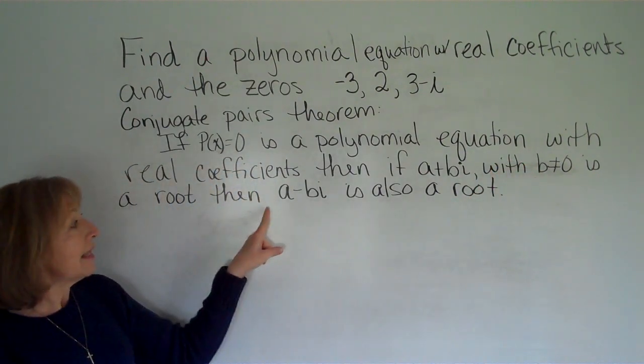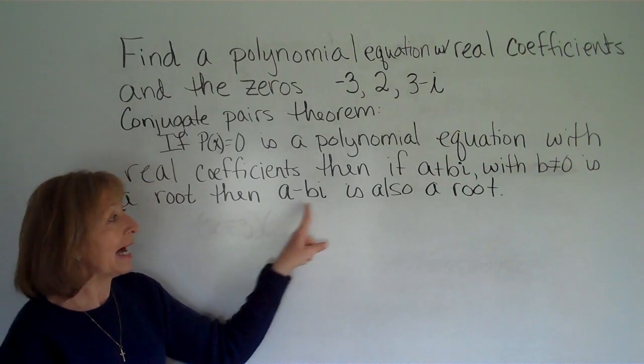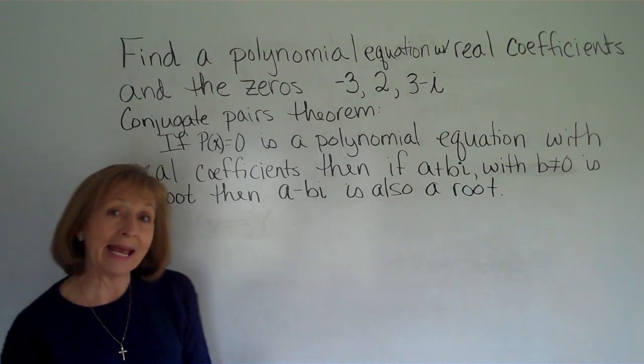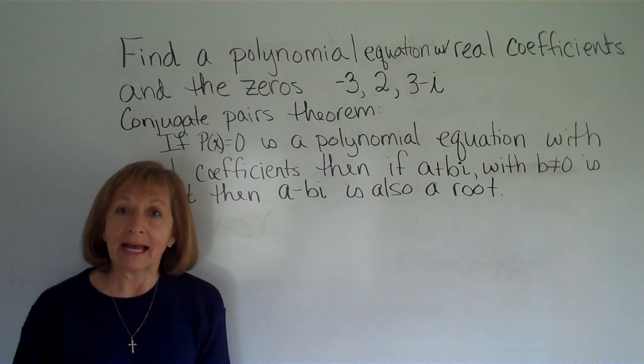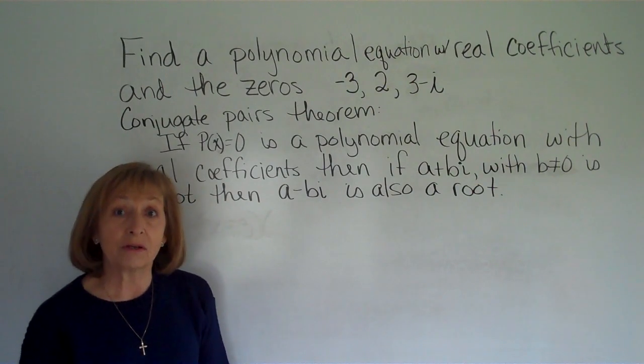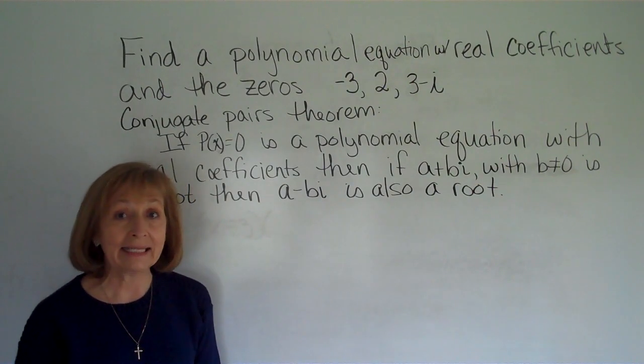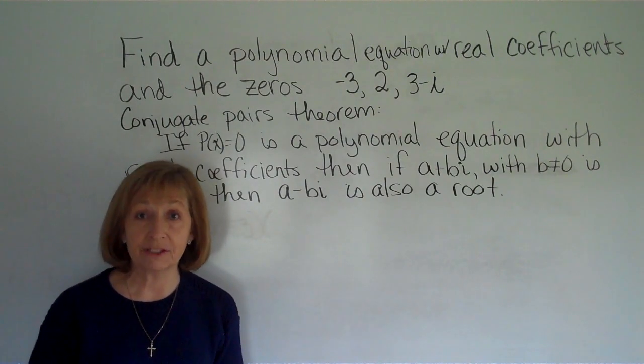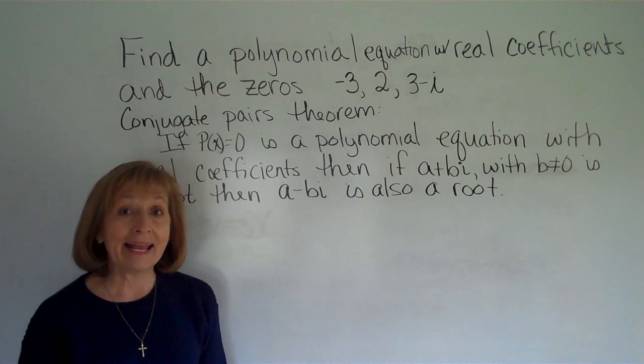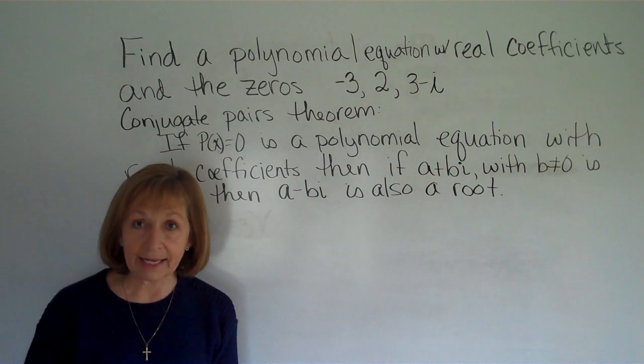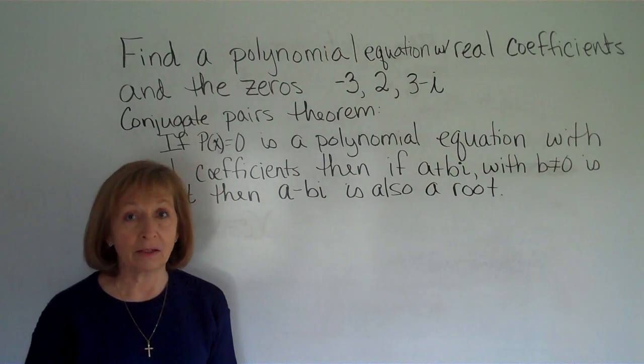then a minus bi is also a root. So if I have a root that has a non-zero imaginary part, so the number has a term with an i in it, and I want my polynomial equation to have real coefficients, then I have to make sure that all of my complex numbers that are listed as a root, also their conjugate pairs are used as well.